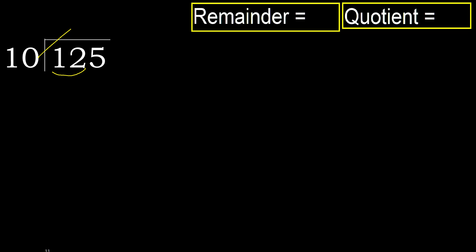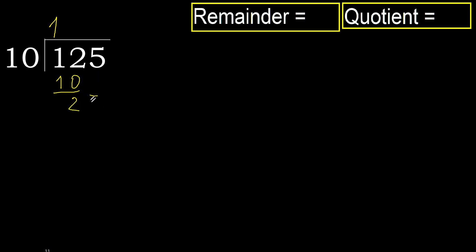10 multiplied by 2 is 20 — 20 is greater. 10 multiplied by 1 is 10, is not greater, ok. Subtract: 12 minus 10 is 2. Next.